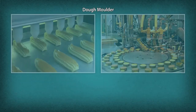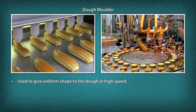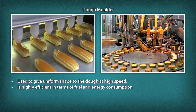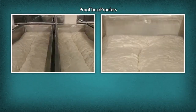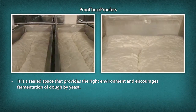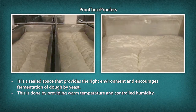Dough Molder: used to give uniform shape to the dough at high speed. It is highly efficient in terms of fuel and energy consumption. Proof Box and Proofers: a sealed space that provides the right environment and encourages fermentation of dough by yeast. This is done by providing warm temperature and controlled humidity.